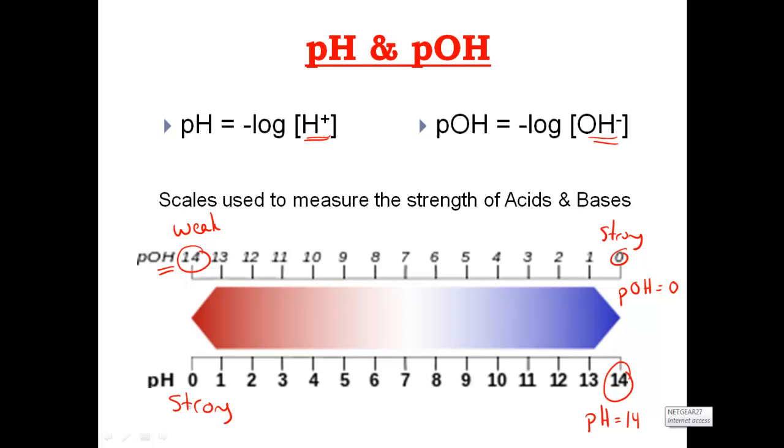Likewise, a strong acid is considered strong if it has a pH of 0. But it would have a pOH of 14. That's right, the acid can have a pOH of 14, meaning it's weak as well. So what we're looking at here, guys, is different ways to measure or express the strengths of acids and bases.